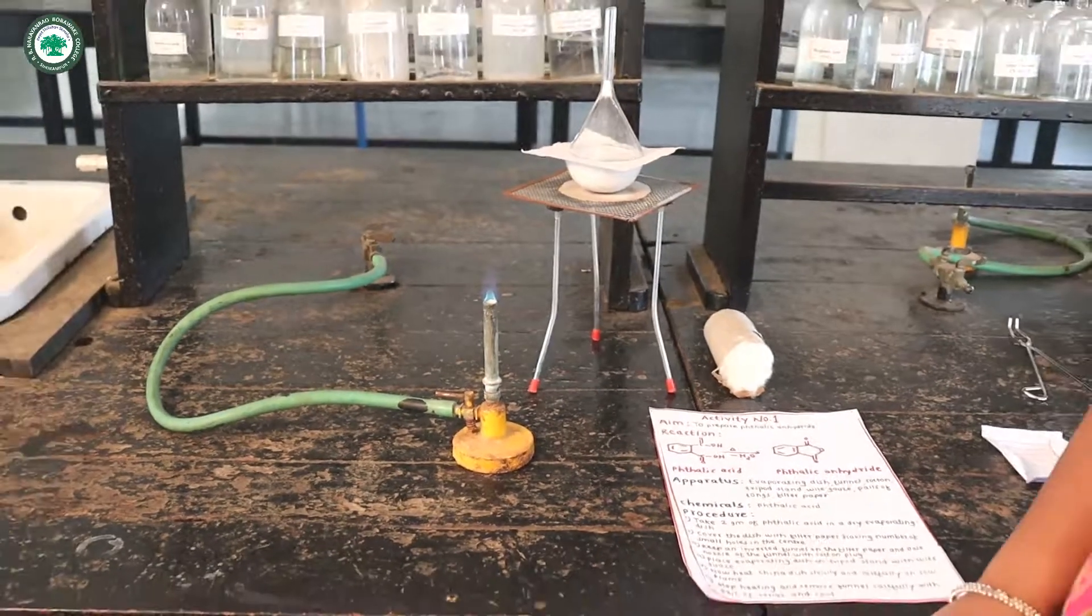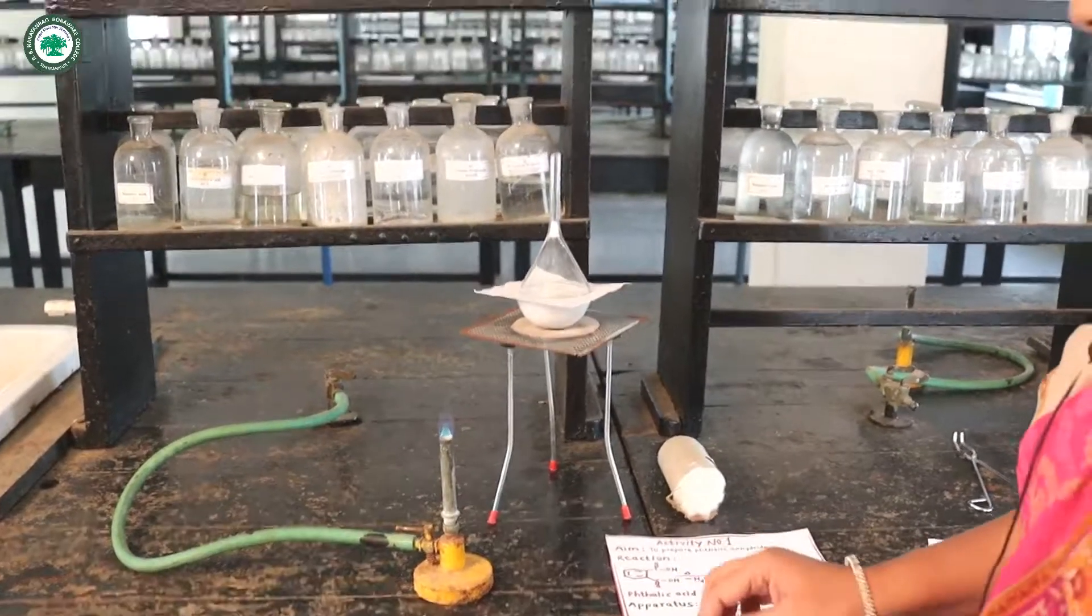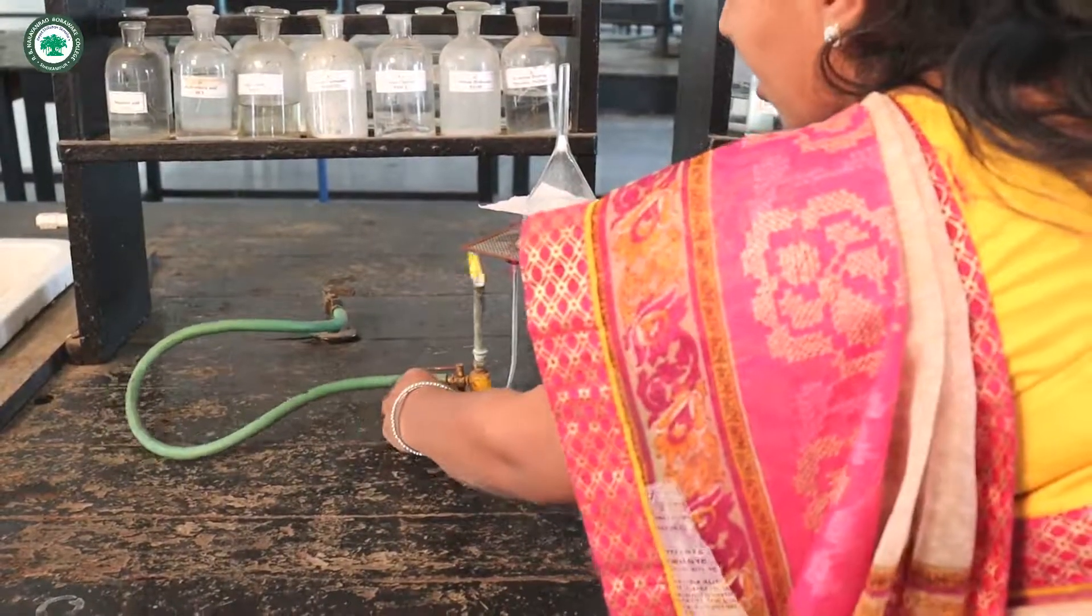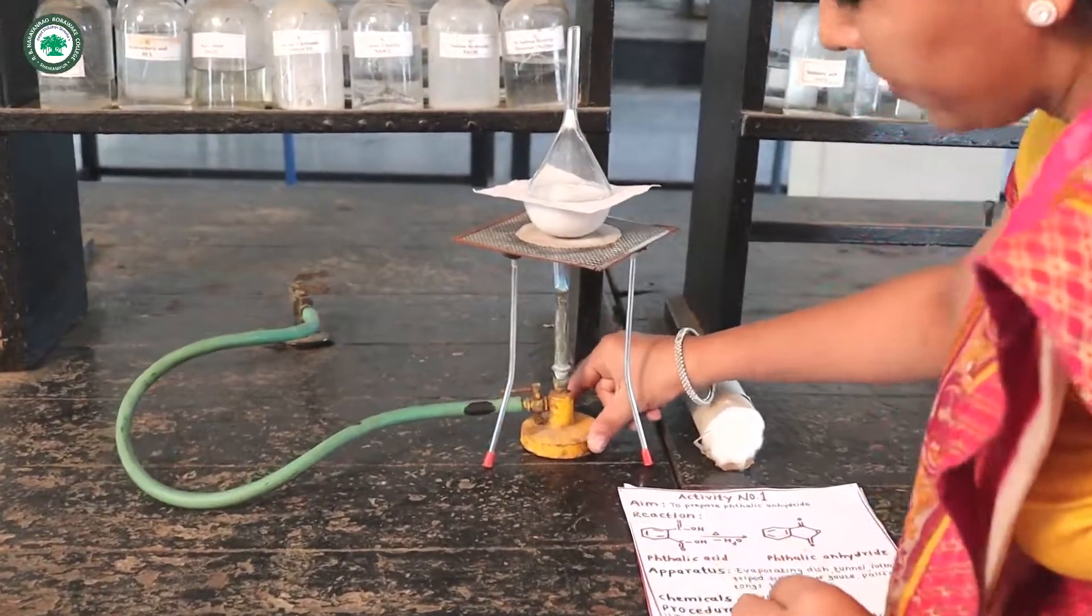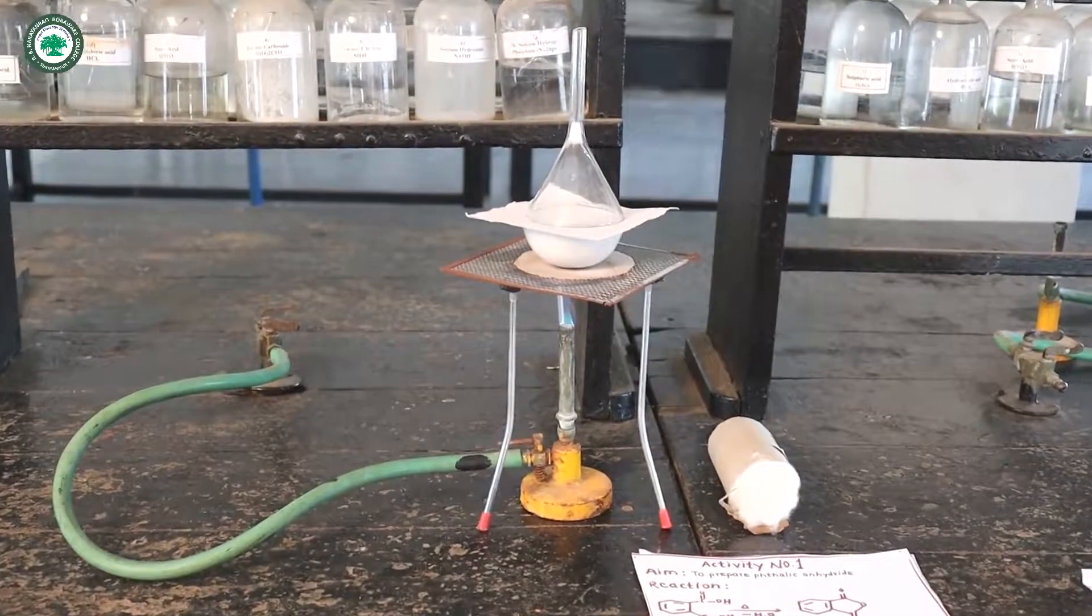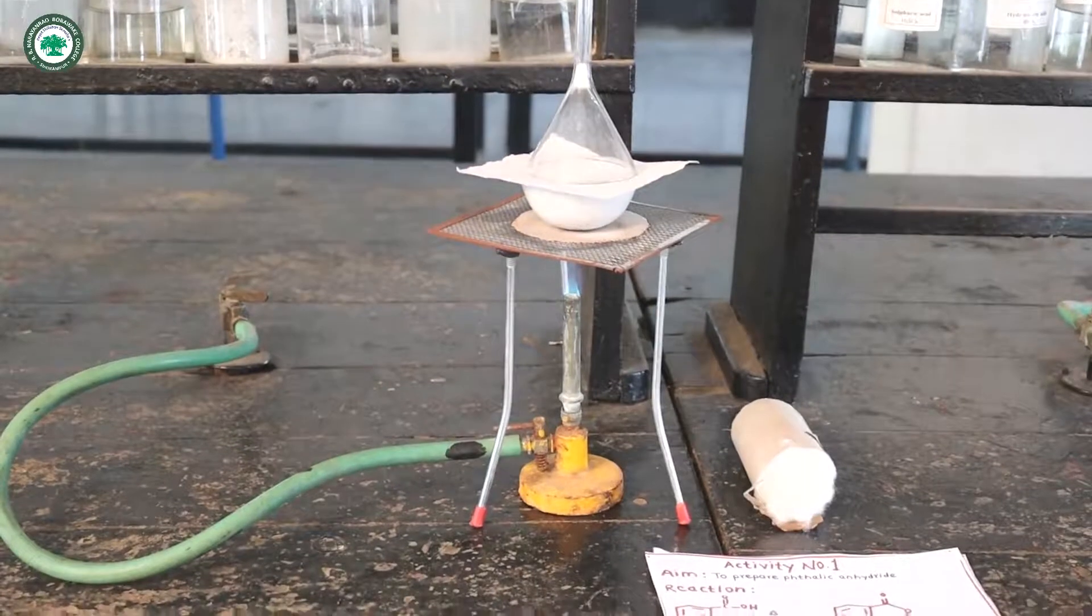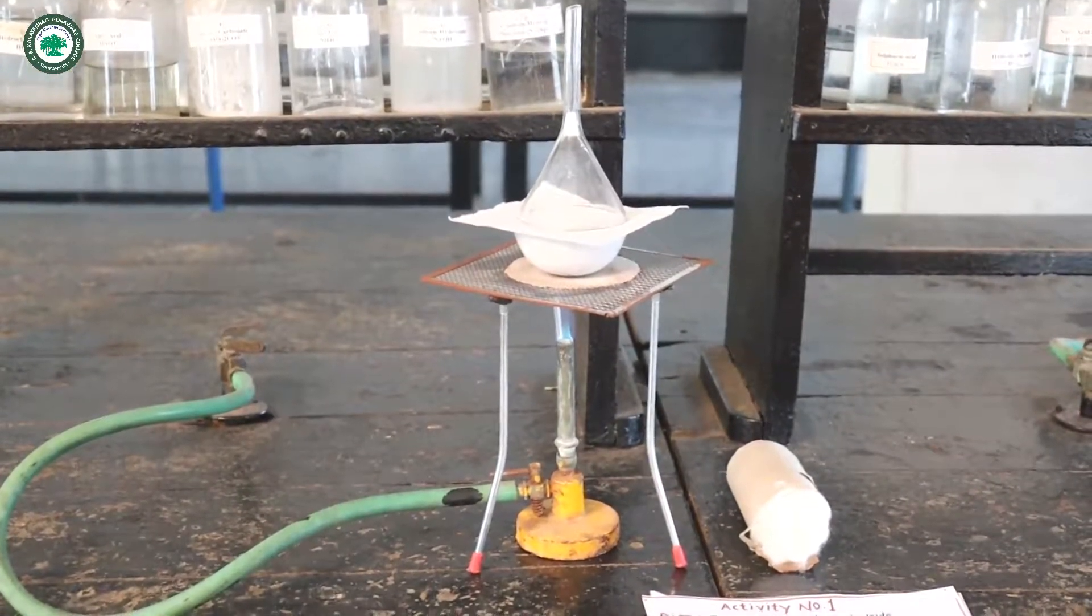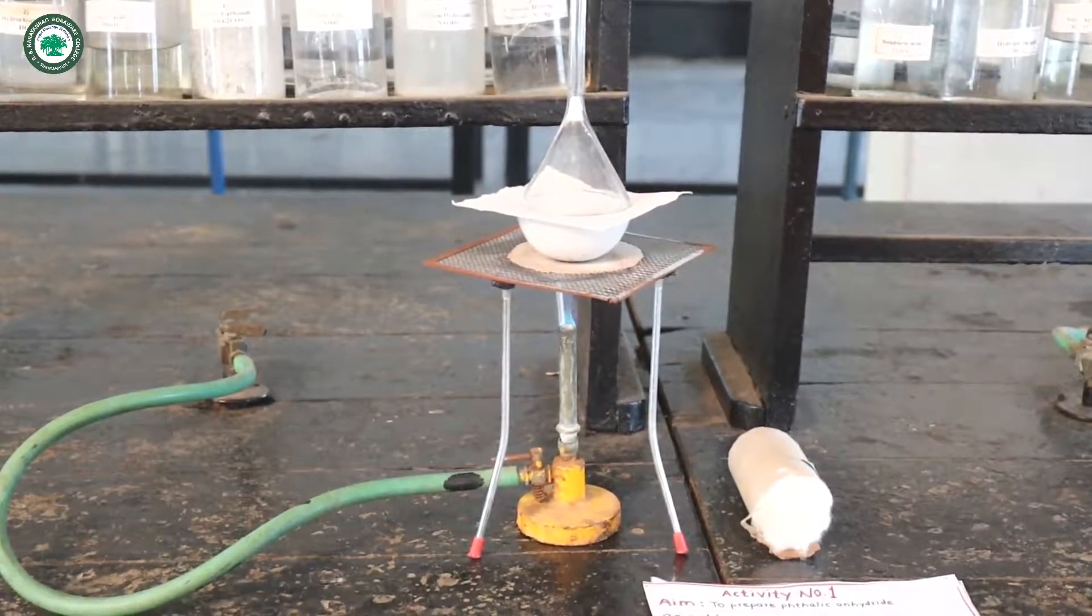Then now heat the evaporating dish very slowly. It must be noted that flame should be very slow so as to avoid decomposition of phthalic acid.